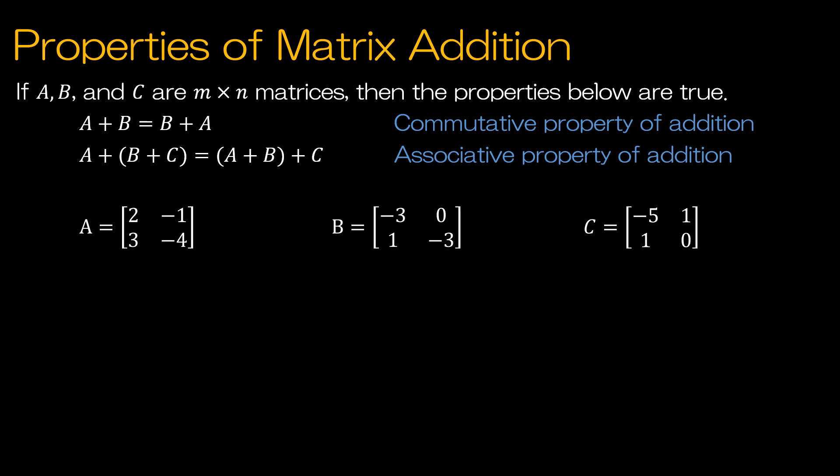We have the commutative property of addition — commutative means that you can add matrices in either order and you'll get the same results. We also have the associative property of addition, which is all about grouping. So commutative is about order, and associative is about grouping.